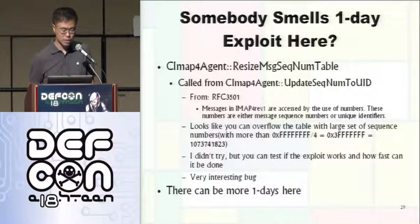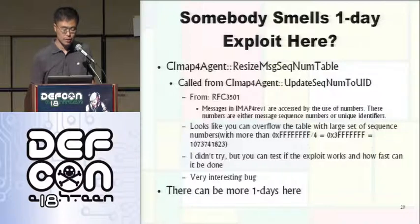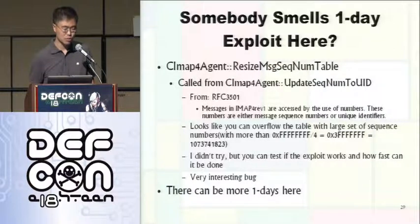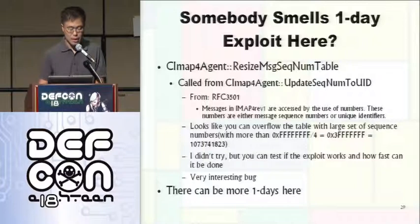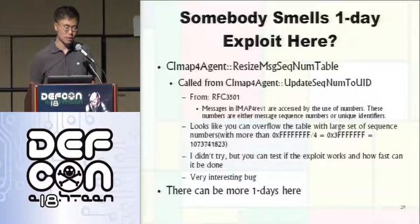From the list of modified functions, they only talked about one or two — CPOP3 and IMAP — but it actually shows a lot of meaningful entries. So they might be hiding something. I dug into more, and the other method — CImap4Agent's ResizeMessageSequenceNumberTable — is fixing the same problem, calling ULongLongToULong just as they fixed the other integer overflow. It looks like when a programmer fixed one integer overflow, they were educated about the technique and fixed similar problems in other parts of the code, but didn't disclose it.